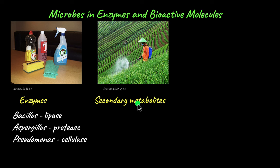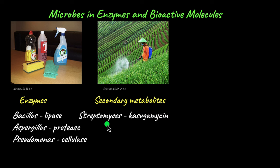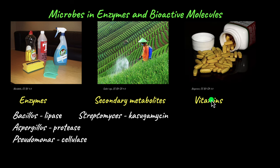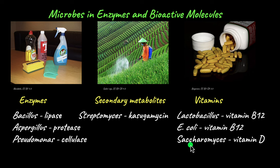Secondary metabolites are substances produced by organisms that are not particularly useful to themselves, but that we have a lot of use for. For example, Streptomyces produces the secondary metabolite casugamycin, which is used as a biopesticide in many regions. Vitamins are also extremely important for proper body functioning — microorganisms like Lactobacillus, E. coli, and Saccharomyces are used to produce vitamin supplements such as vitamin B12 and vitamin D.